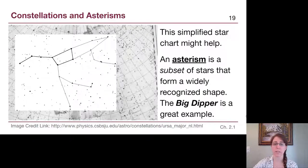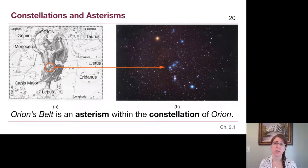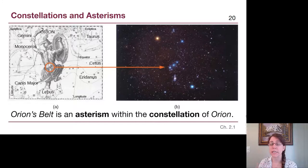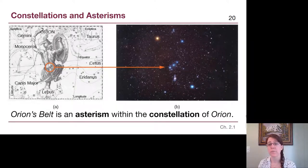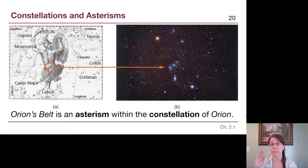The Summer Triangle is another example of an asterism. Orion's Belt is probably the single most well-known outside of the Big Dipper. Orion's Belt is not the entire constellation — even the bright stars easily visible include Betelgeuse in the upper left with an orange color, and Rigel in the bottom right with a bluer tint. Orion's Belt is an example of an asterism, and Orion would be an example of the full constellation.